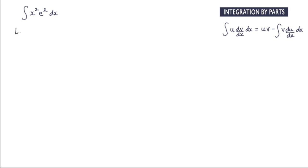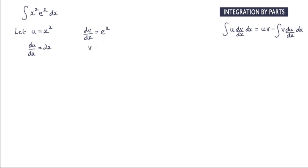I'm going to commence by saying let u equal x squared, and therefore dv by dx must be equal to e to the x. Differentiating this, we get du by dx is equal to 2x. And we need to integrate dv by dx, and that's just going to be equal to e to the x.